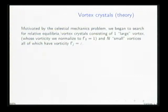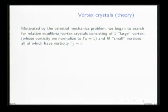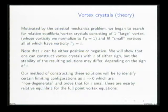We'll start by taking one large vortex whose strength I'll normalize to be one, and surround it by n small vortices, all with the same small strength epsilon. I will allow for the possibility that epsilon can be either positive or negative—I'm not going to assume that the small vortices have the same sign as the large vortex. We'll see that this produces dramatic changes in, for instance, the stability of the resulting configurations.